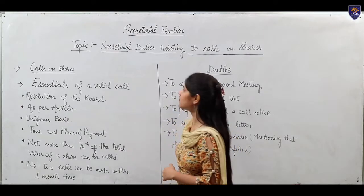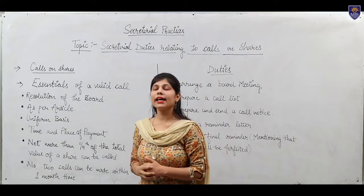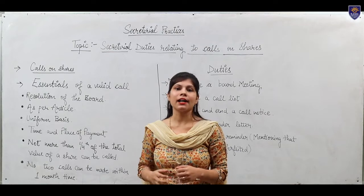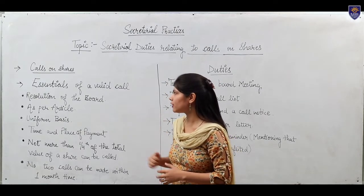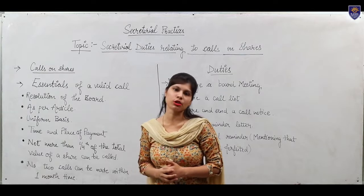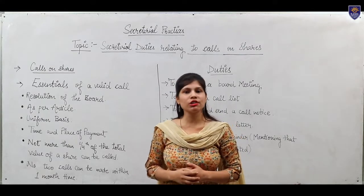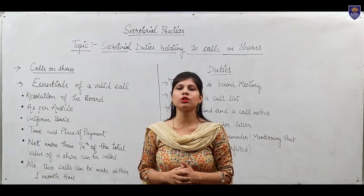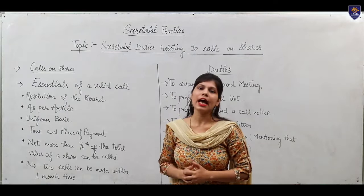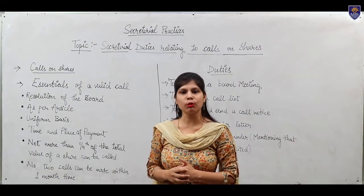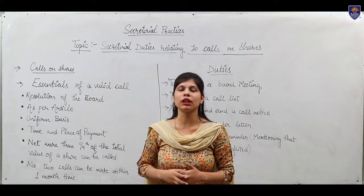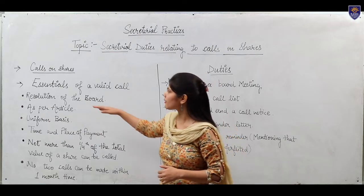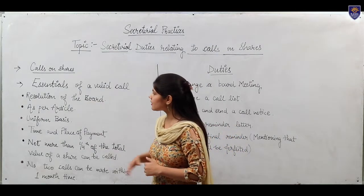Before we begin with the duties, we need to understand what are the essentials of a valid call. The first is a resolution of the board. The company cannot simply ask for the amount due; it needs to call a board meeting and pass a resolution by the board of directors giving notice to shareholders that this amount is due. The next essential is that calls must be made as per the articles, and if the articles are silent about it, then we consider Table F.